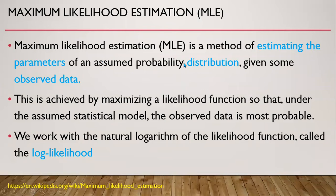Maximum Likelihood Estimation is a method of estimating the parameters of an assumed probability distribution, given some observed data. This is achieved by maximizing a likelihood function so that under the assumed statistical model, the observed data is most probable.